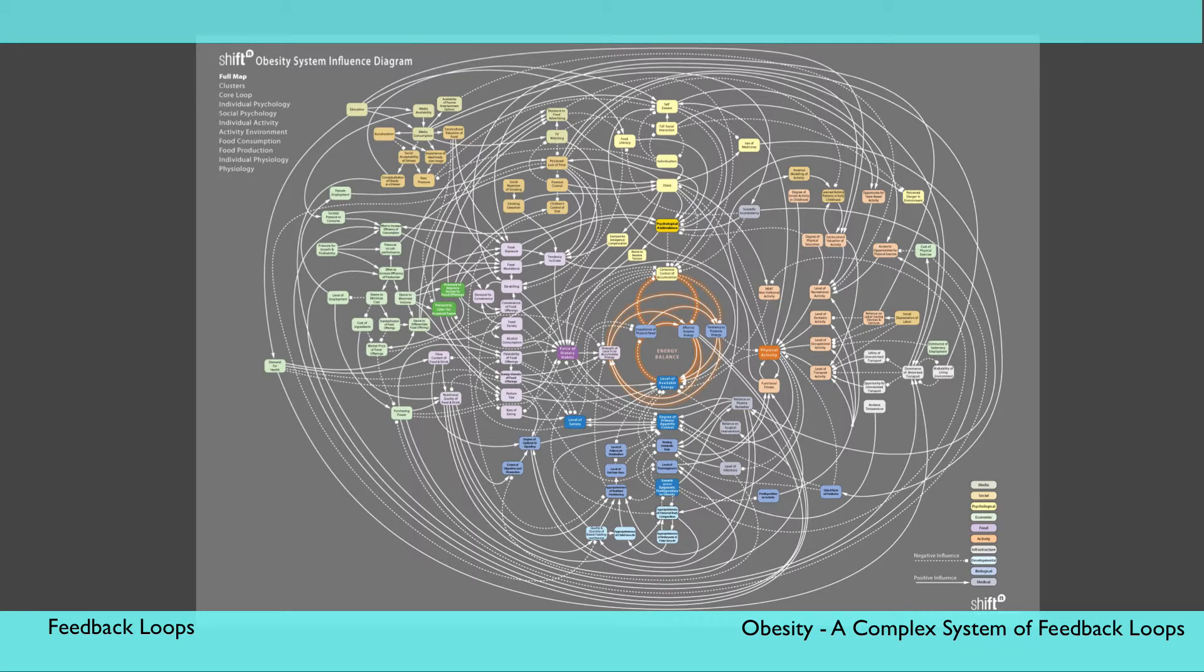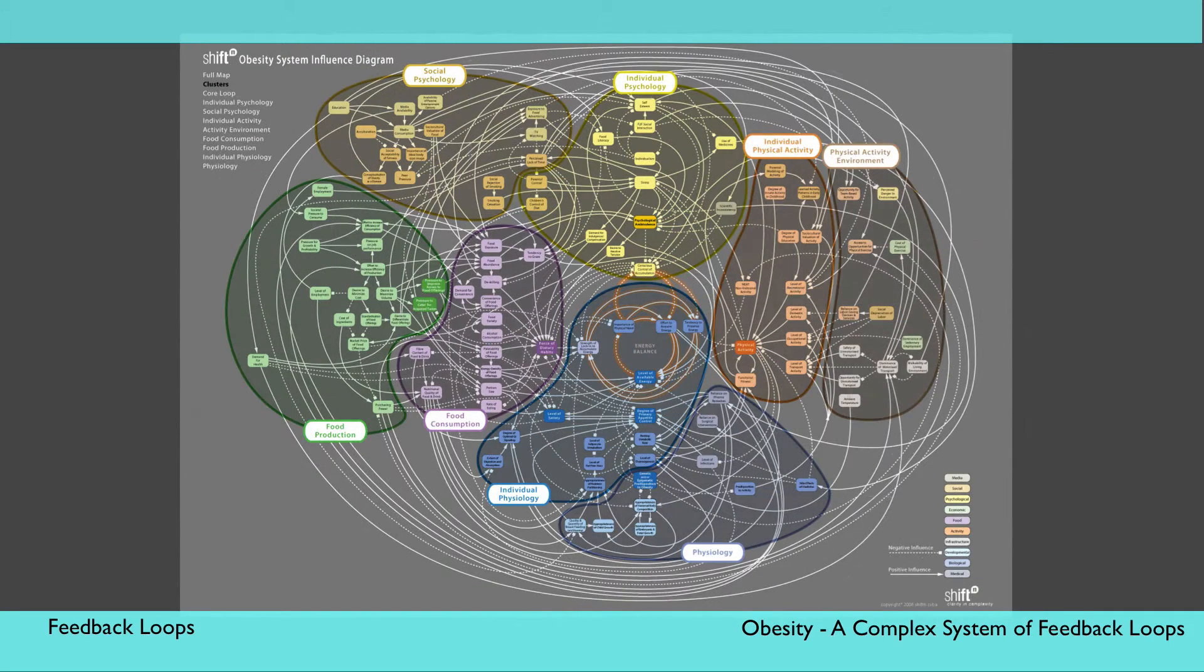In a complex system, multiple feedback loops are at work, as multiple parts of the system interact. Unlike the previous example, feedback loops in complex systems will typically have more than two components within them, and will be interacting with multiple other feedback loops across the system.